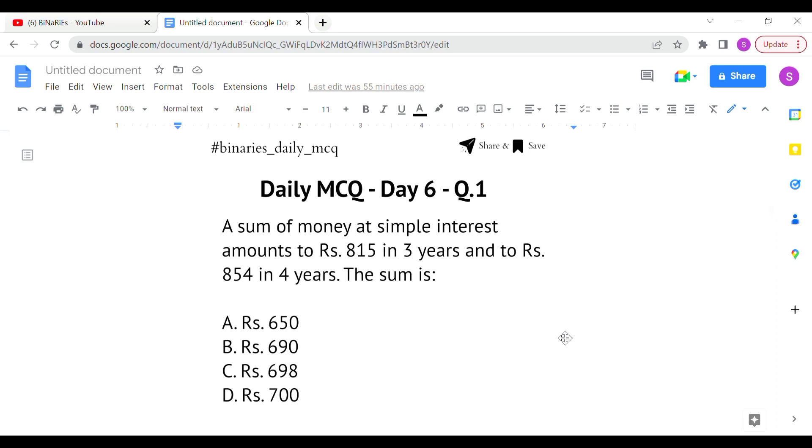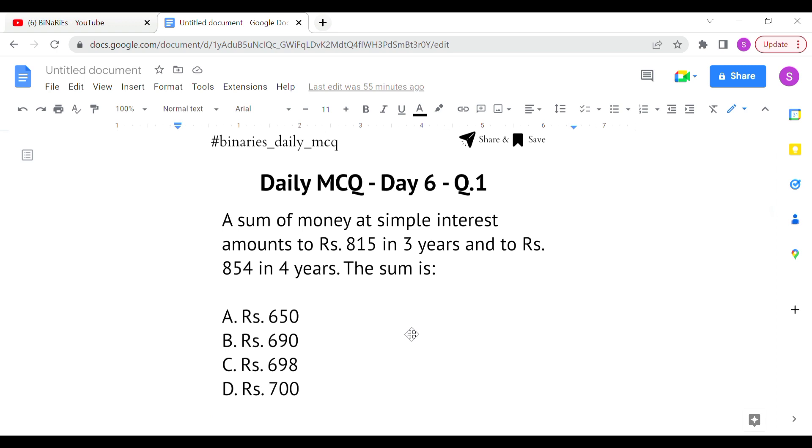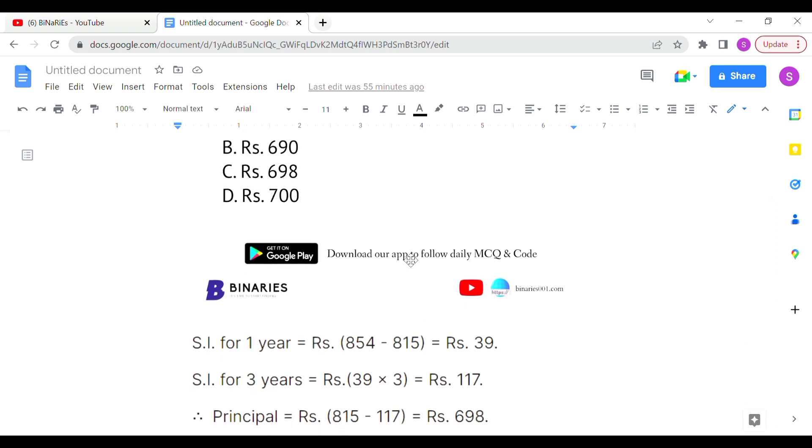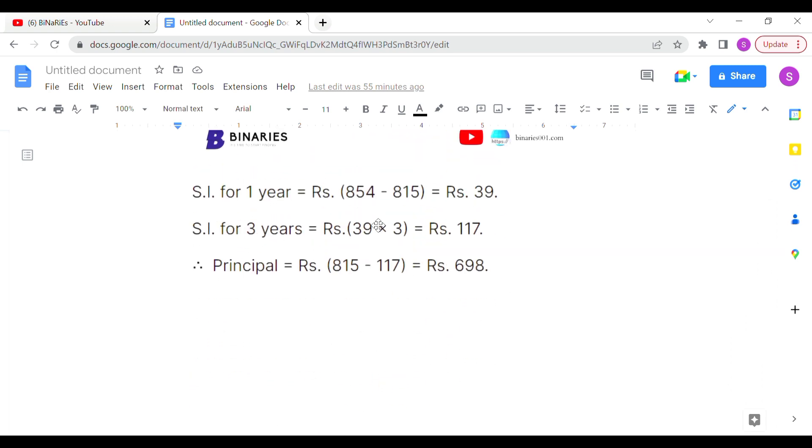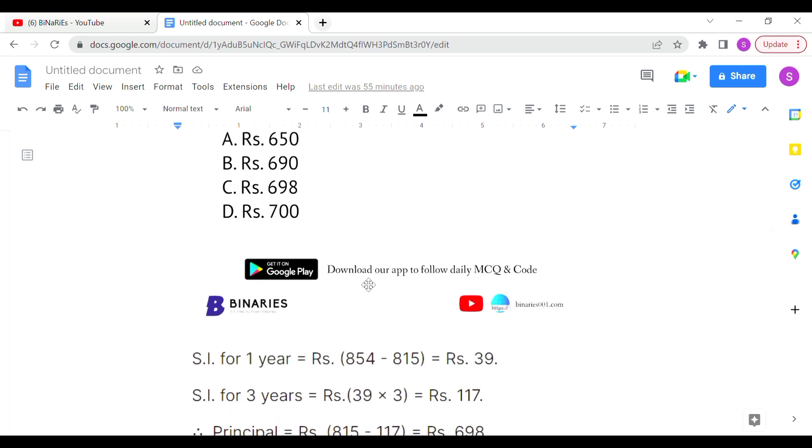If we look at the data, we can find the simple interest for 1 year. The difference between 4 years and 3 years gives us the simple interest for 1 year, which is 39. Simple interest for 3 years is 39 into 3, which equals rupees 117. So from 815, we subtract 117 to get the principal: 815 minus 117 equals 698. Therefore, option C is the correct answer.